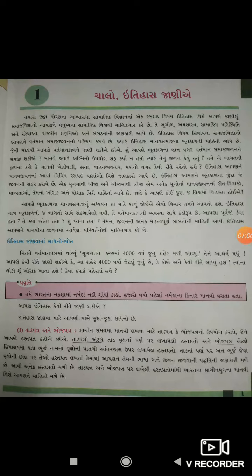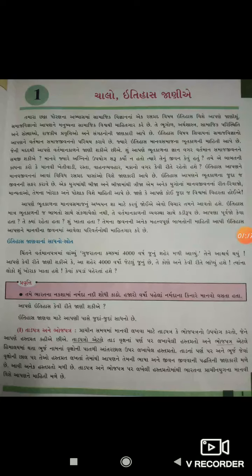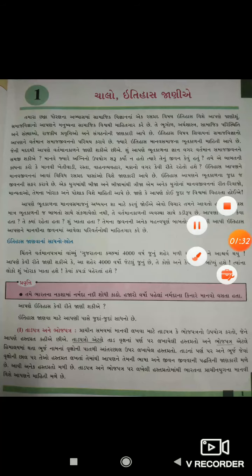આ આપણે ઇન્ટ્રોડક્શન જોયું. હવે ઇતિહાસ જાણવાના મુખ્યત્વે બે પ્રકાર છે — એક લિખિત અને બીજું અલિખિત. લિખિત માં ગ્રંથો, દસ્તાવેજો, શિલા લેખો, લખાણો વગેરેનો સમાવેશ થાય છે.